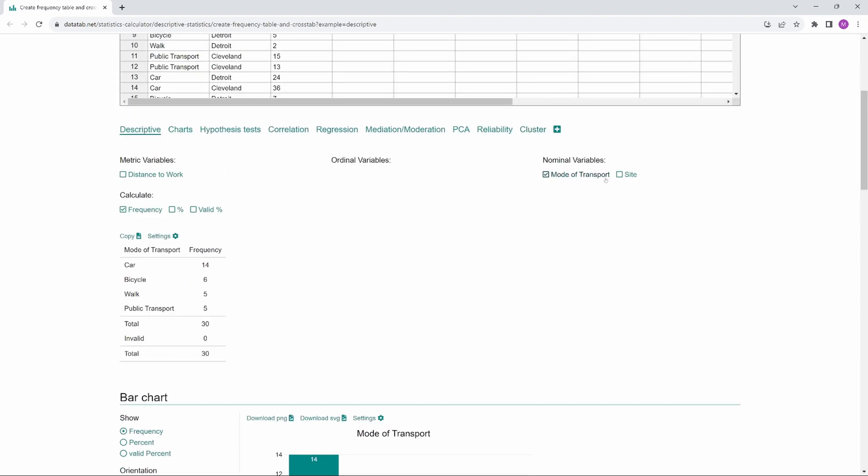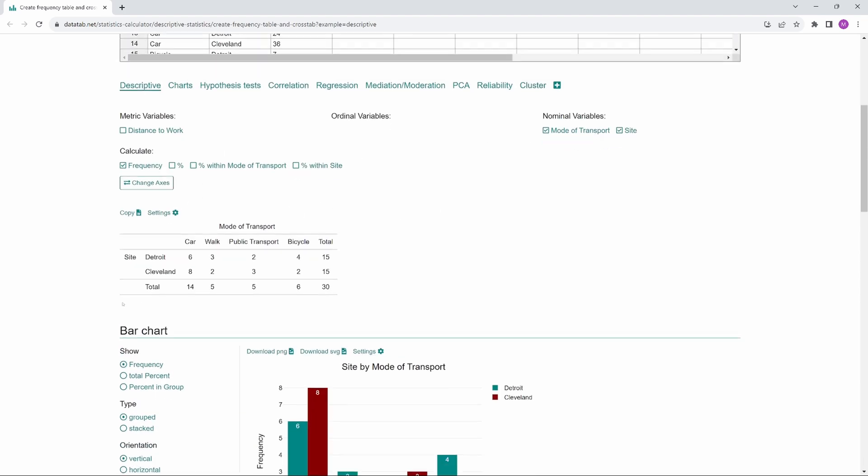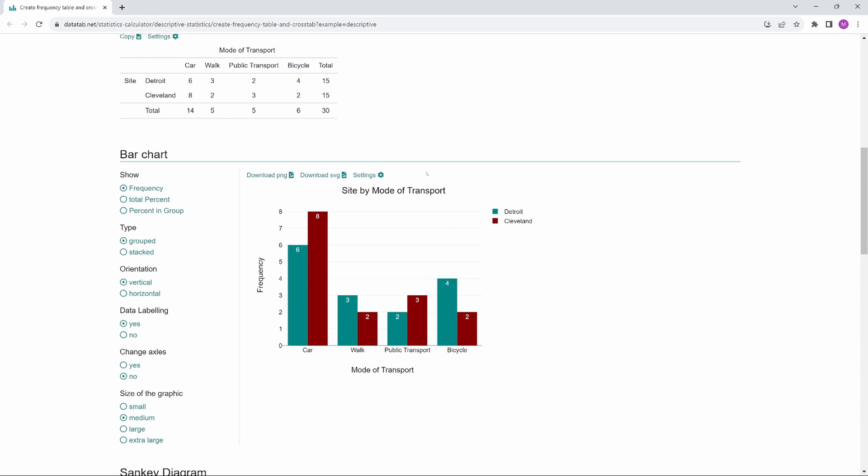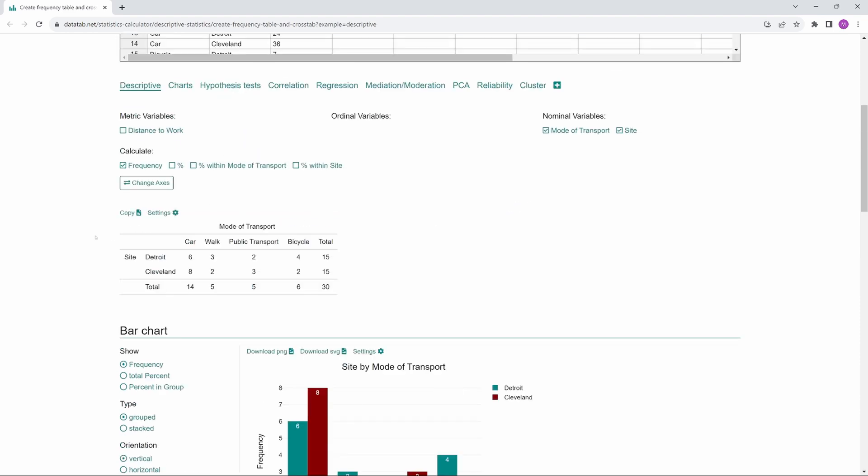If we also select site, we get a cross table here and a grouped bar chart for the diagrams. Here we can specify whether we want the chart to be grouped or stacked.